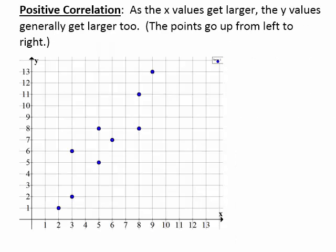Now let's take a look at the different types of correlation. A positive correlation tells us that as the x values get larger, the y values generally get larger as well. In other words, the points go up from left to right. If we take a look at this picture, you'll notice it has a positive correlation because in general, from left to right, all of those points go up.